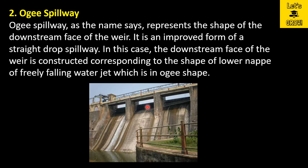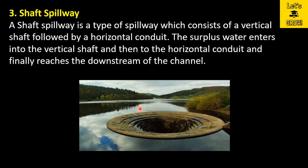The ogee profile of the water falling from the spillway will be different for different heads. This ogee shape or profile is designed for the maximum head. So whenever water is discharged at the maximum head, whatever profile is traced by this falling water will be the same as the ogee shape. This is the profile of the ogee shape.